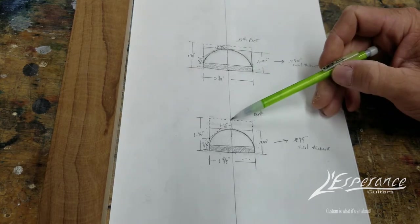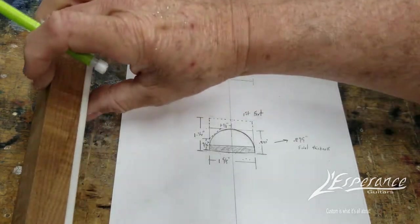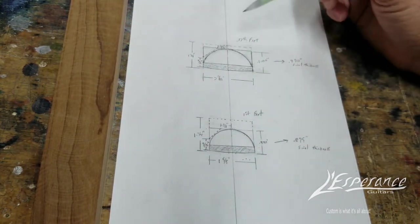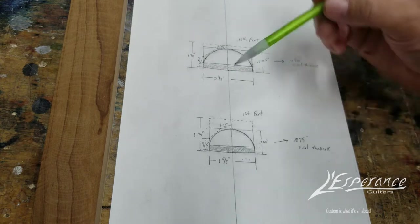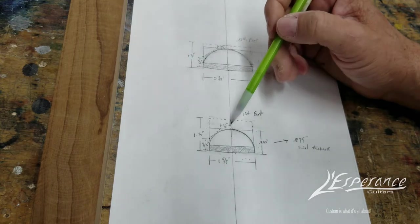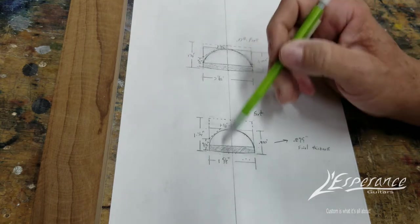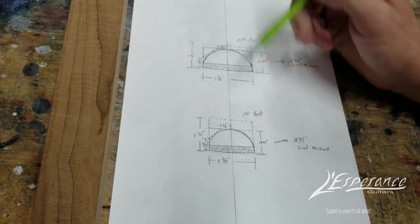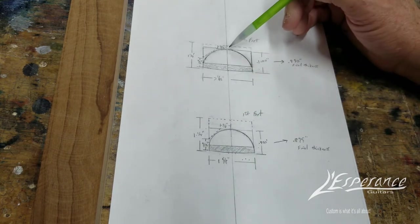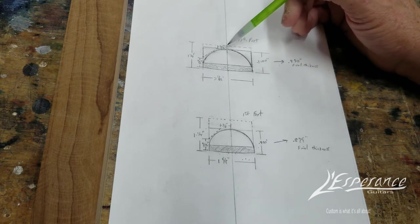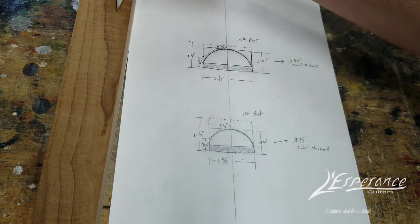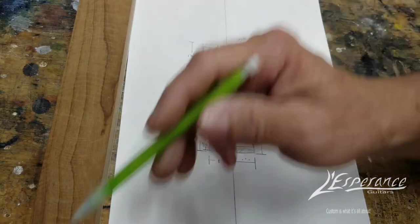I generally do D shape necks, or a soft C. This is a C shape. With that dimension brought down, the thickness brought down, then I'm going to draw a center line on this neck. I'm going to measure at the first fret from the center line out both ways. This shows numbers from one side, but it's going to be done on both sides.